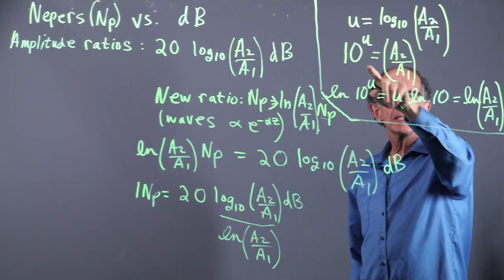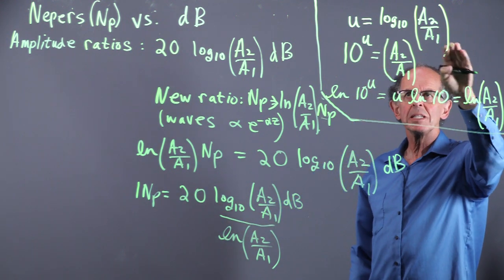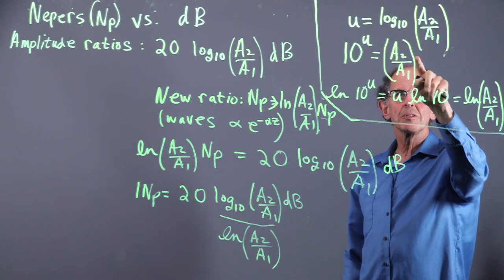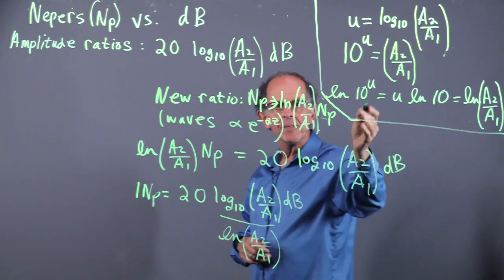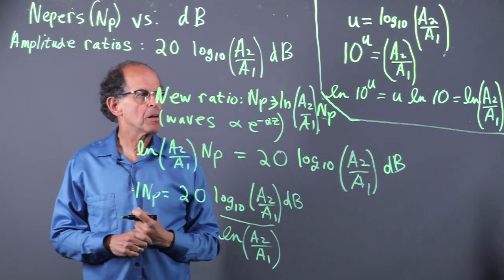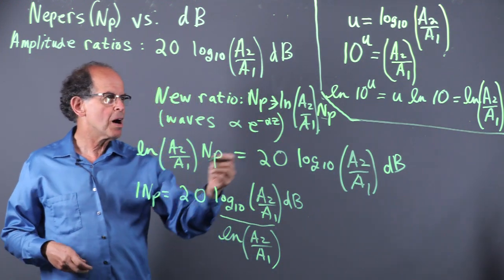And that means that 10 to the power U is equal to A2 over A1. And then at the bottom, we can see that the log, using the property of sublogs, we get this relationship.